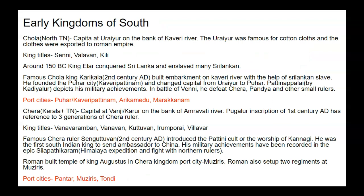Chola Kingdom: they ruled over northern Tamil Nadu. Their capital was at Urejur on the bank of Kaveri River. Urejur was a famous centre for cotton cloth and the cloths were exported to the Roman Empire.